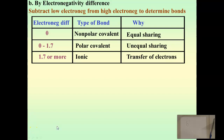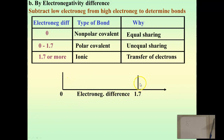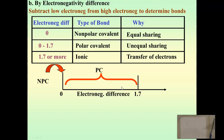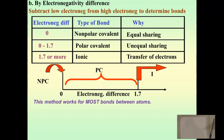Another way to look at this is as a diagram. Draw a line at 1.7. If the difference is exactly zero, it's a nonpolar covalent bond. If the difference is higher than zero but less than 1.7, that's a polar covalent bond. If it's 1.7 or more, that's an ionic bond. This method works for most bonds between atoms and is a great way to start learning how to predict bond types, though I'll show you a better method later.